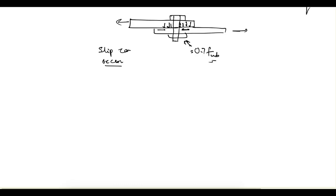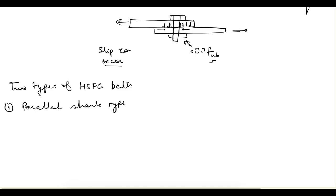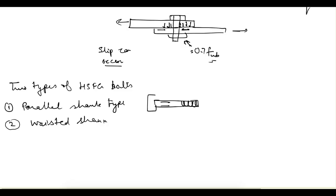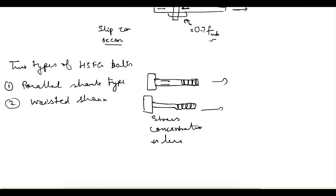The code specifies two types of HSFG bolts: one is the parallel shank type and the other is the waisted shank type. In the parallel shank type, the threaded portion root area is less than the shank area. In the waisted shank type, the shank area is smaller than the root area, so the root area is larger. In the waisted shank type, stress concentration is less — that is the basic difference between the two types.